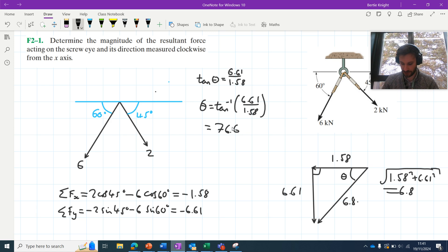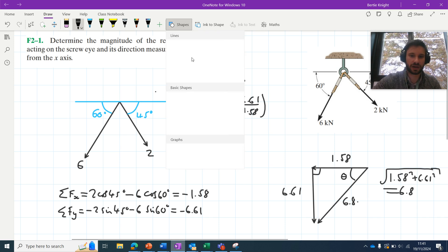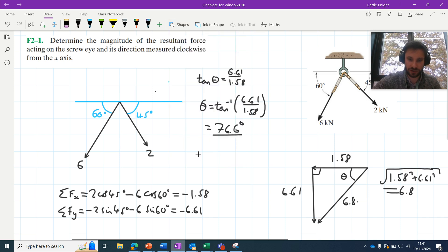Okay, now the question is asking for the angle measured clockwise from the x-axis. So it's not looking for 76.6 degrees here. What it's asking for is, so this is my x-axis here, this is our resultant force here. What we have at the moment is this angle, so this angle is equal to 76.6.